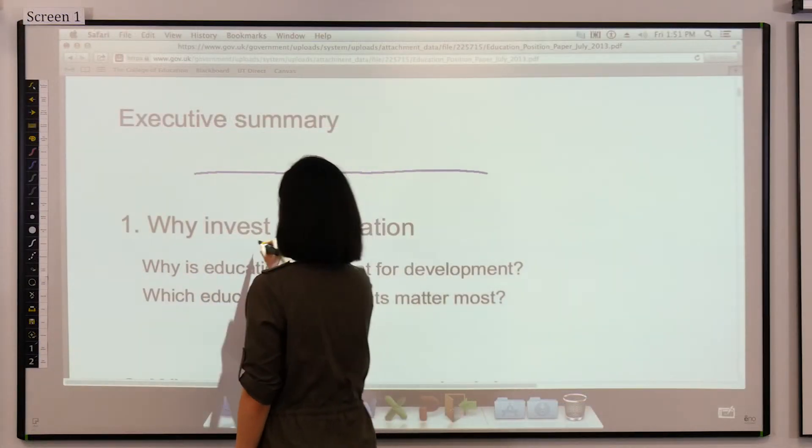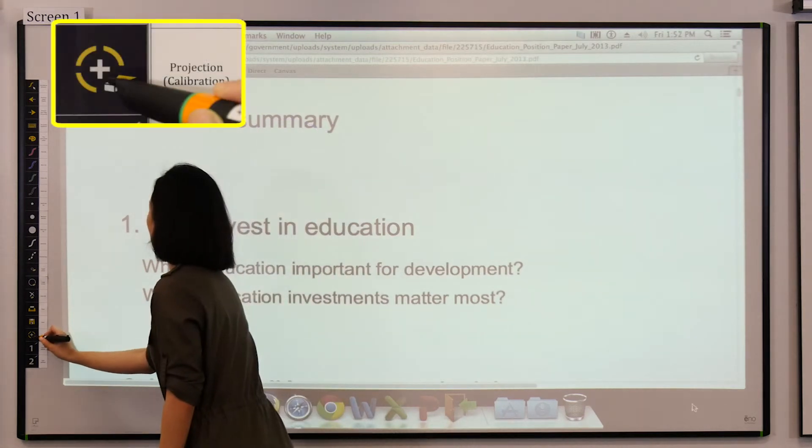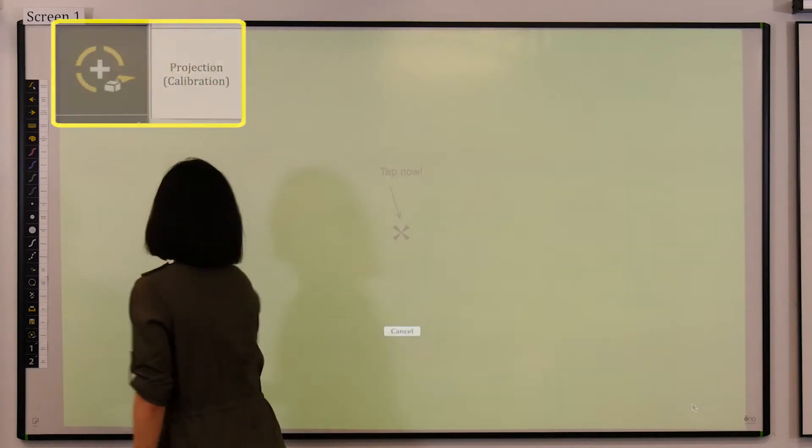If at any time the pen and the board become uncalibrated, press the projection mode icon on the toolbar to recalibrate.